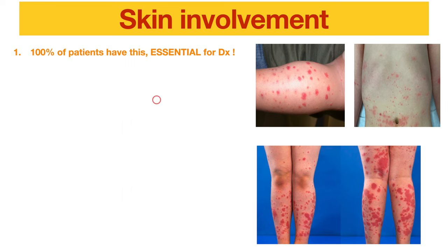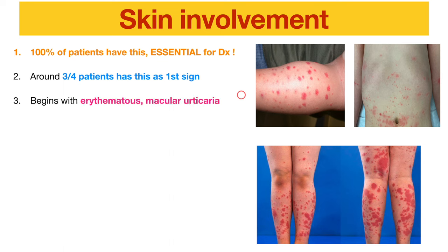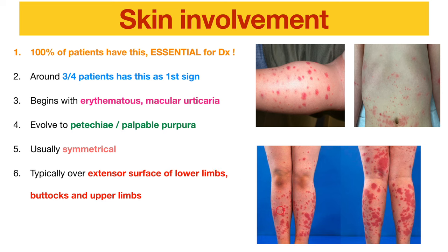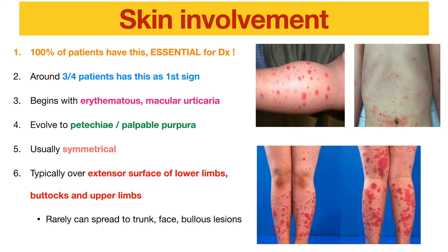The most classical skin finding is palpable purpura over bilateral lower limbs. Around 75% of patients have this as the first sign. It usually begins with erythematous, macular, or urticarial rashes, which evolve into classical petechiae and palpable purpura — typically symmetrical over the extensor surface of the lower limbs. It can also affect the buttocks, upper limbs, and rarely the trunk, face, or form bullous lesions.